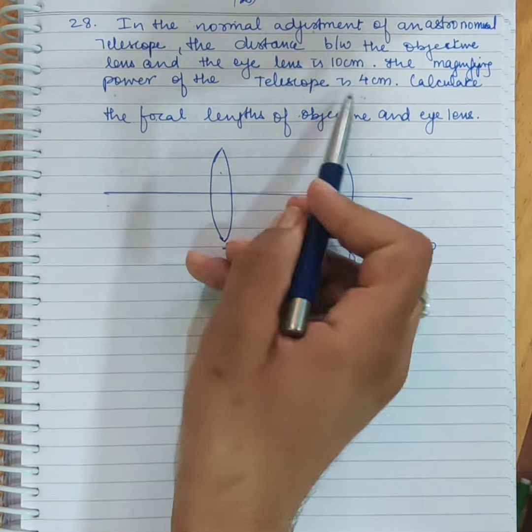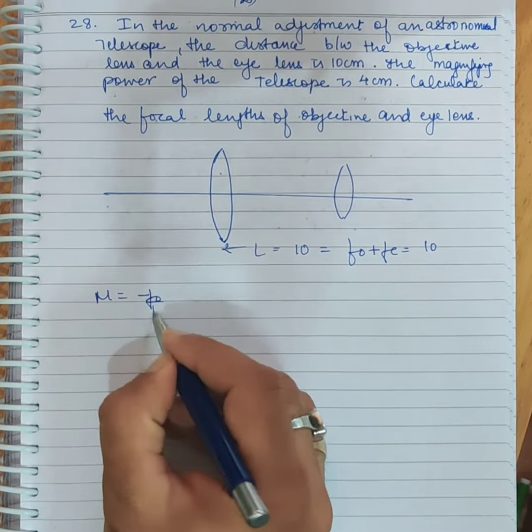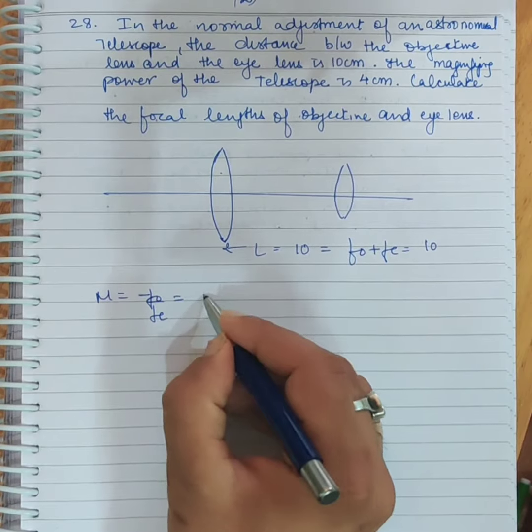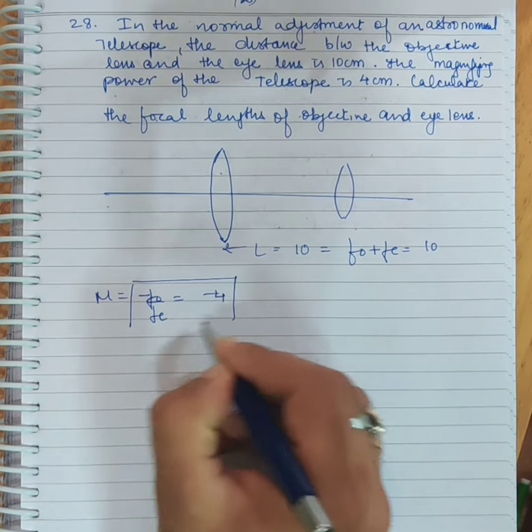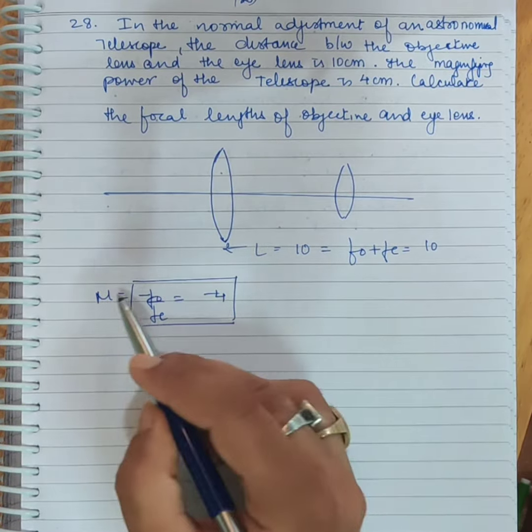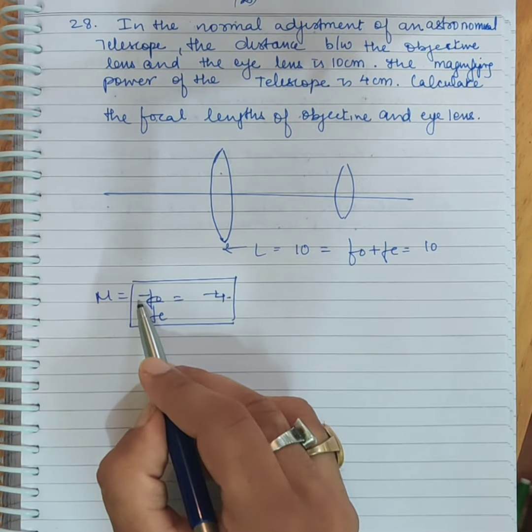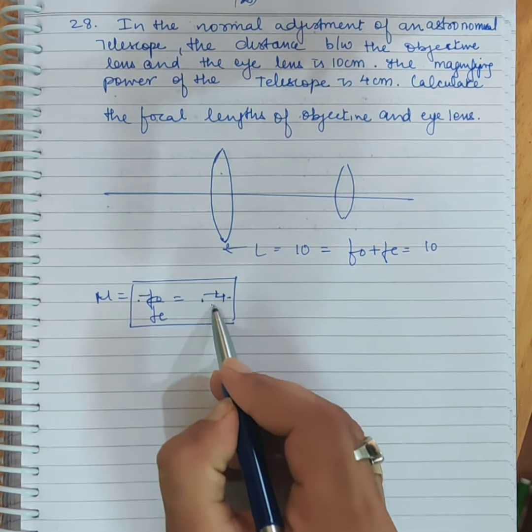The magnifying power of the telescope is 4, or minus 4. Some people can write 4 and put the minus separately. M is minus, so it will be minus 4.